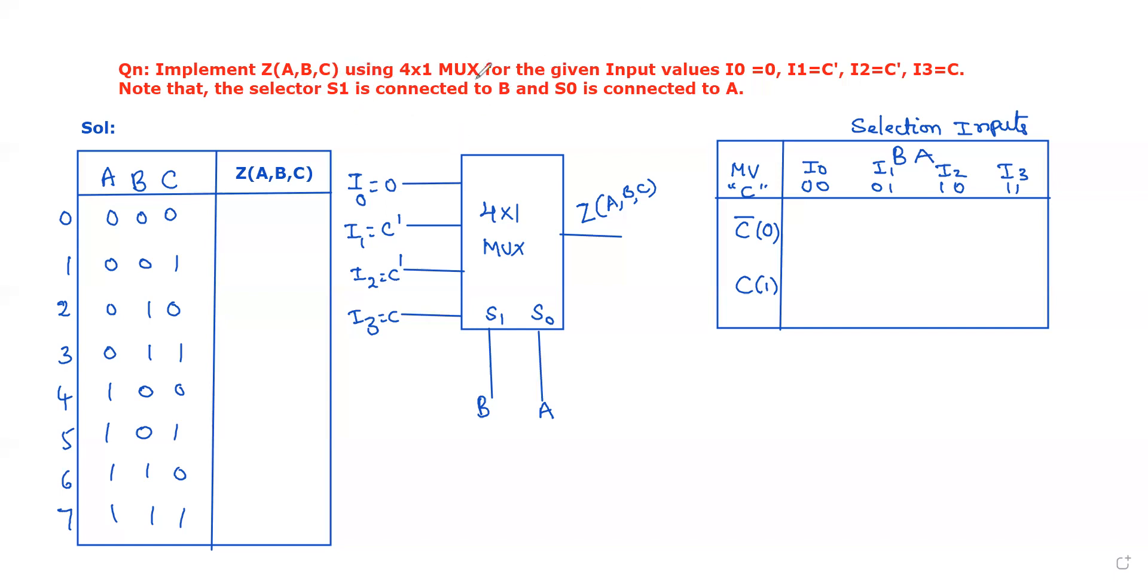Hello guys, in this video we will discuss a problem related to the multiplexer. Here the question is, implement Z of A, B, C using a 4 by 1 multiplexer for the given input values I0, I1, I2, I3. Note that the selector S1 is connected to B and S0 is connected to A.